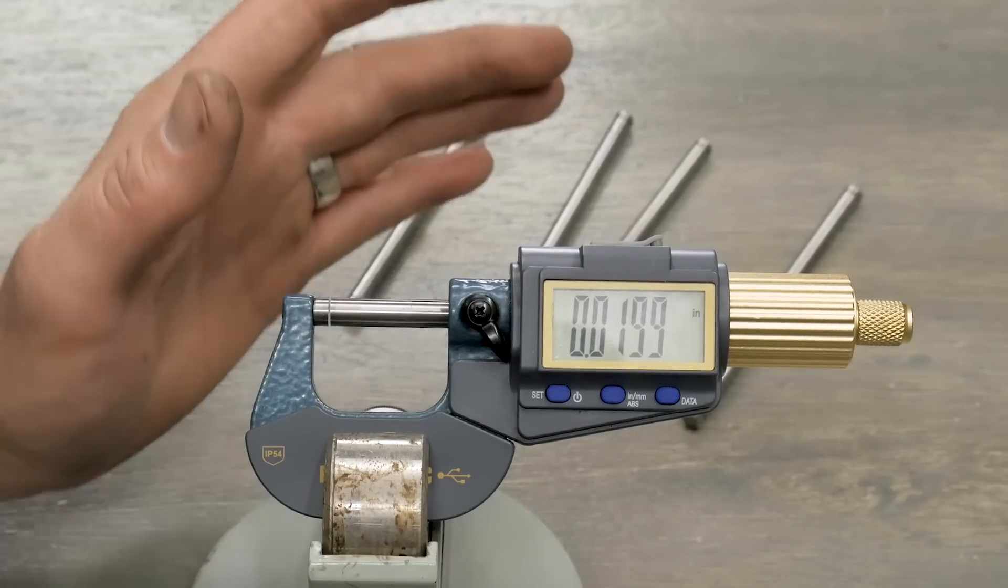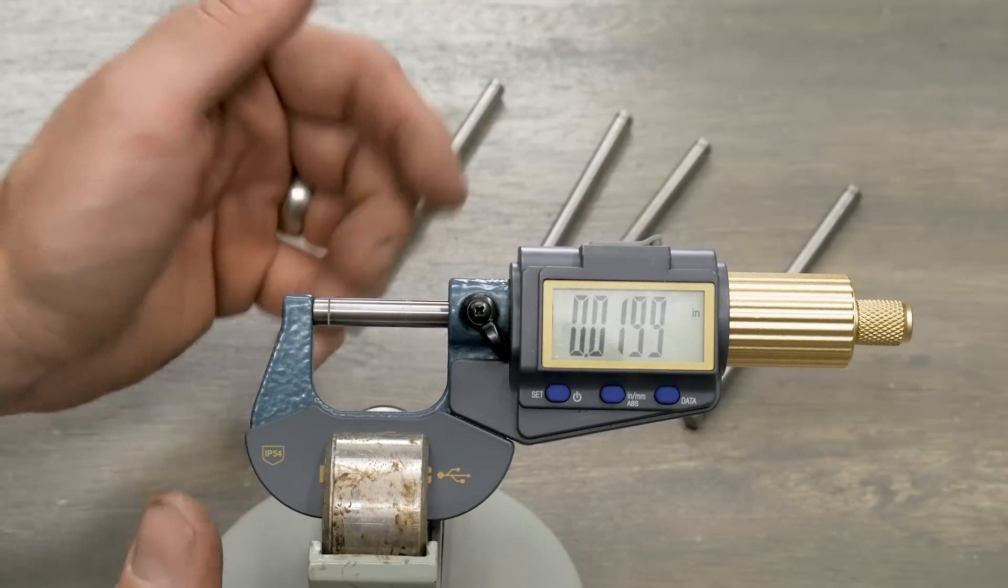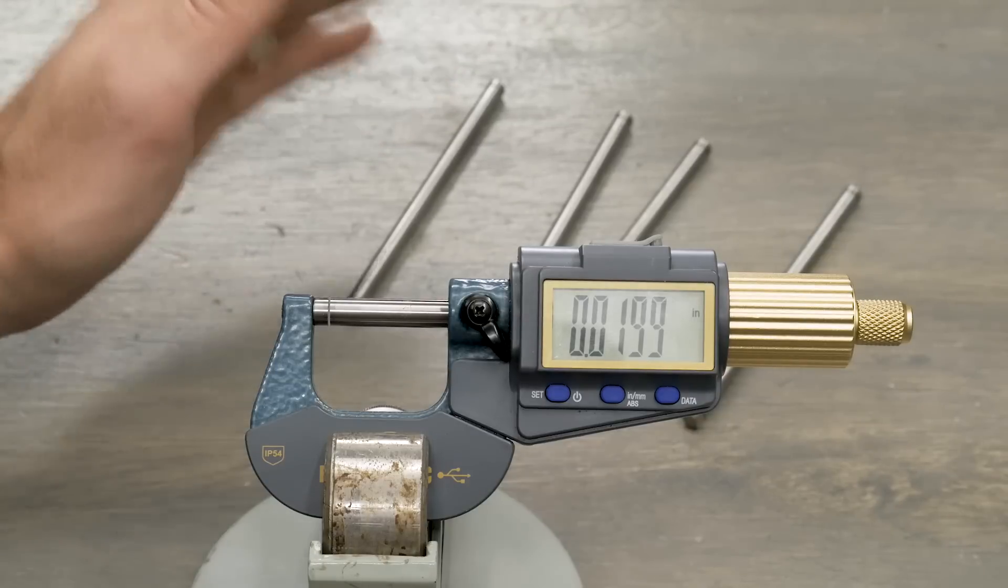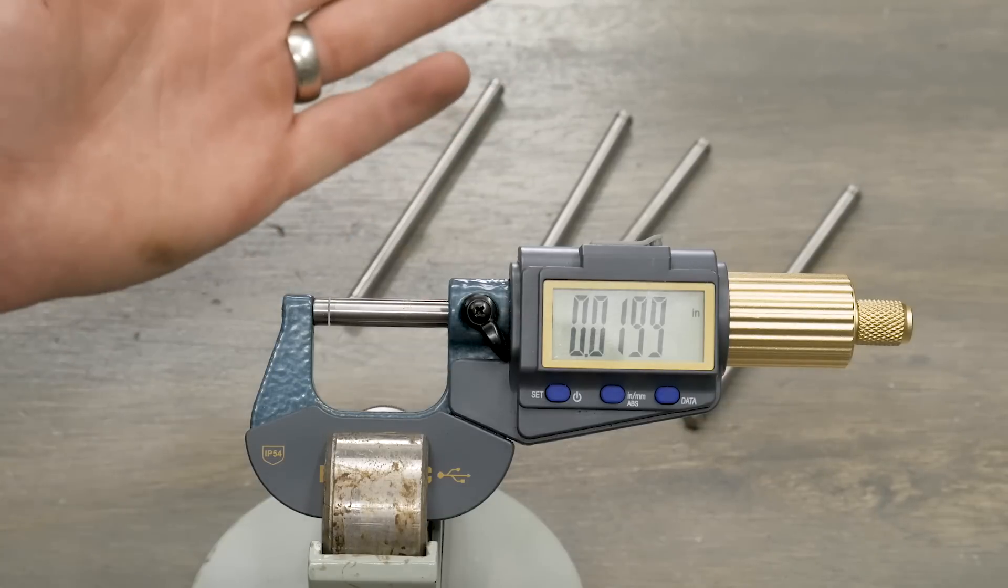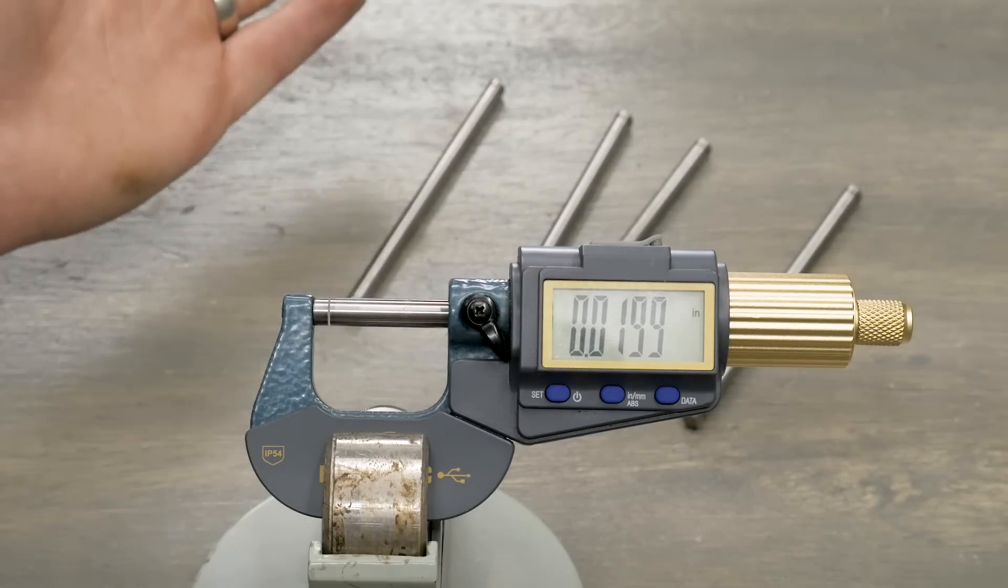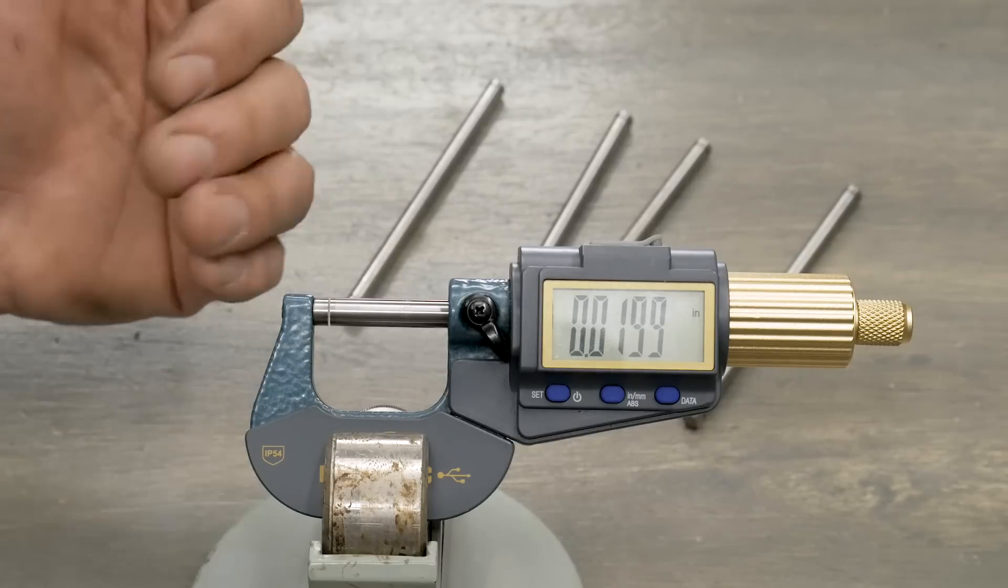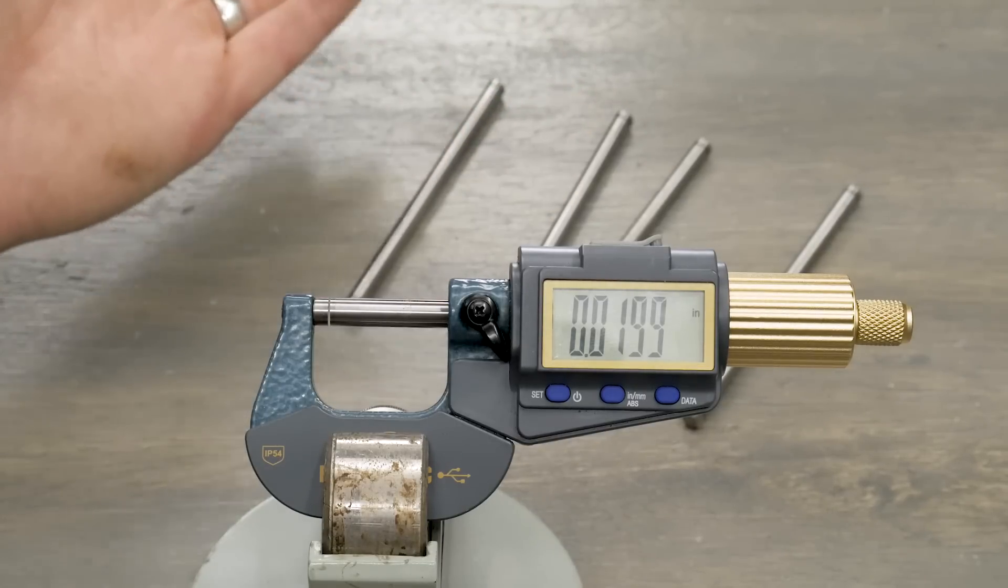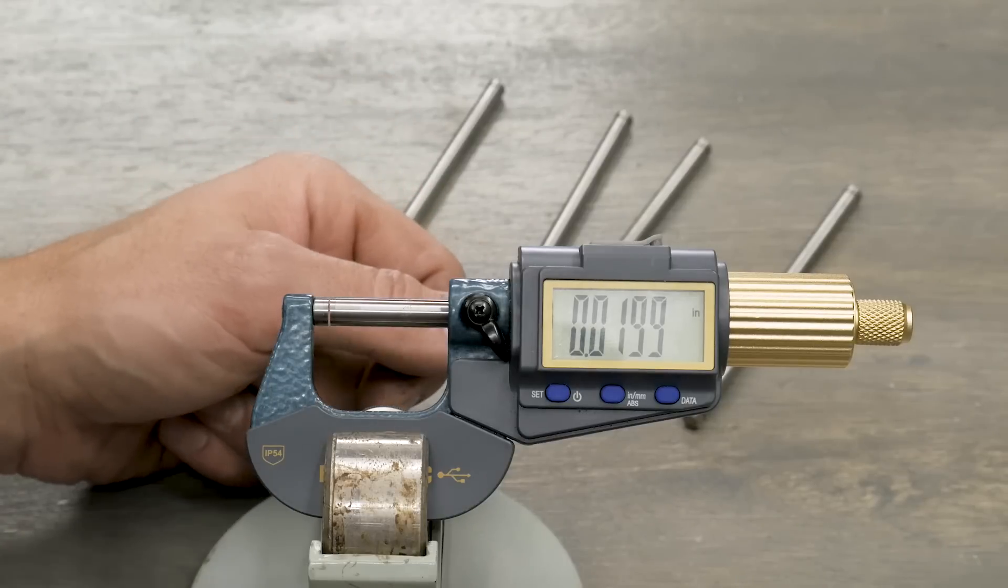Okay, so to demonstrate how this unit works, I've got it mounted in a stand here, and that's going to help me show you what's going on. I've got four quarter inch rods. These are precision rods, and we're going to take measurements of all four rods two different ways. First, we'll do absolute measurements that are the actual diameter, and then we'll do relative measurements, which will show us the difference between these rods in terms of diameter.